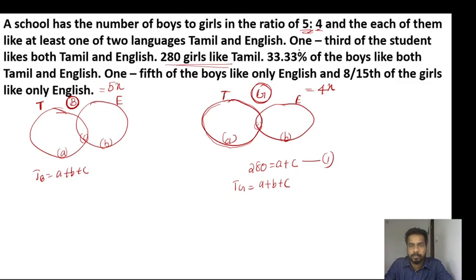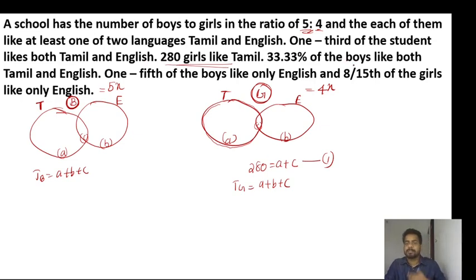So one third of the students like Tamil and English — that's the total we have to do. Total students like Tamil and English. 280 girls like Tamil, and we have to do A plus C. 33% of boys, we have to do A plus C. So that's 4x.